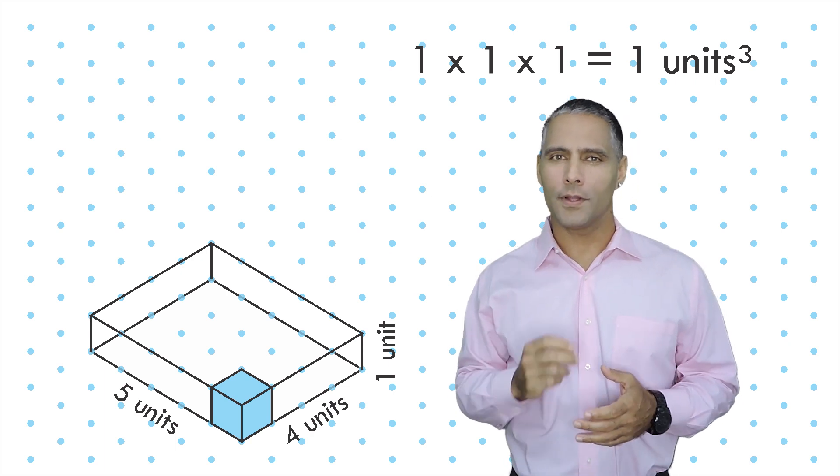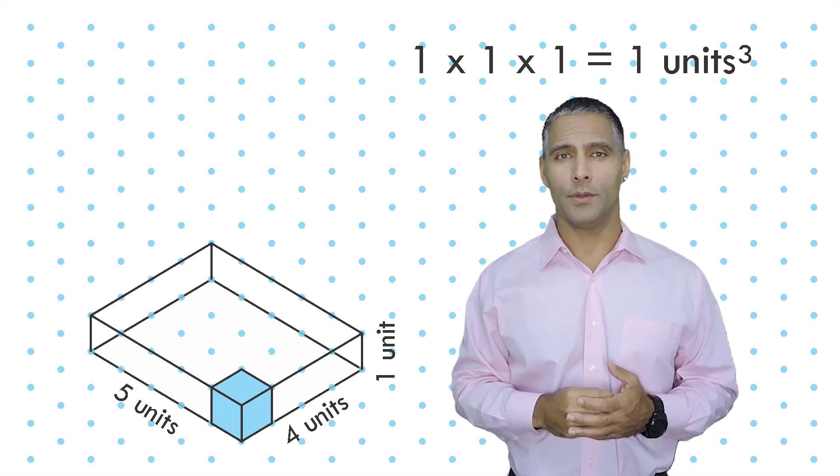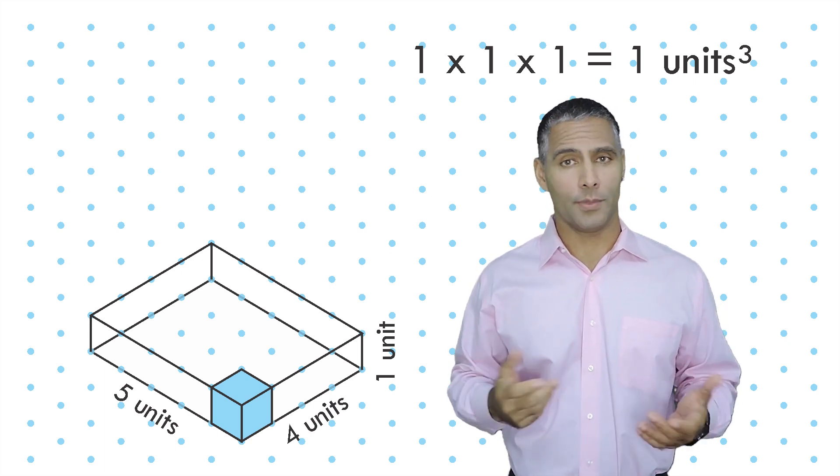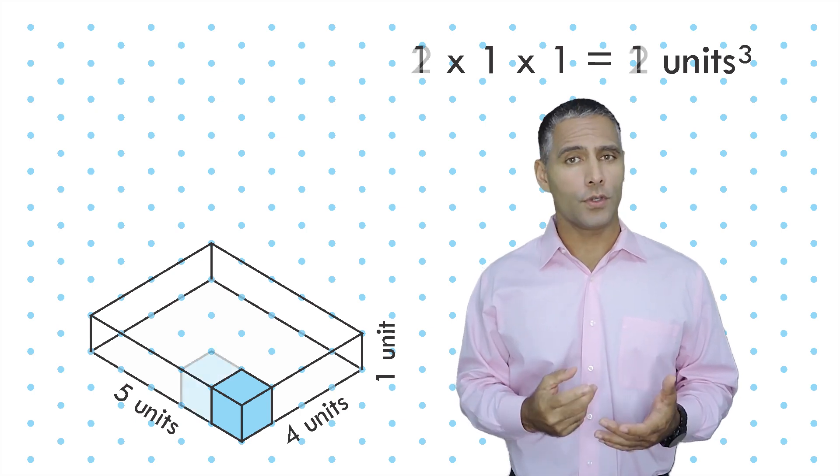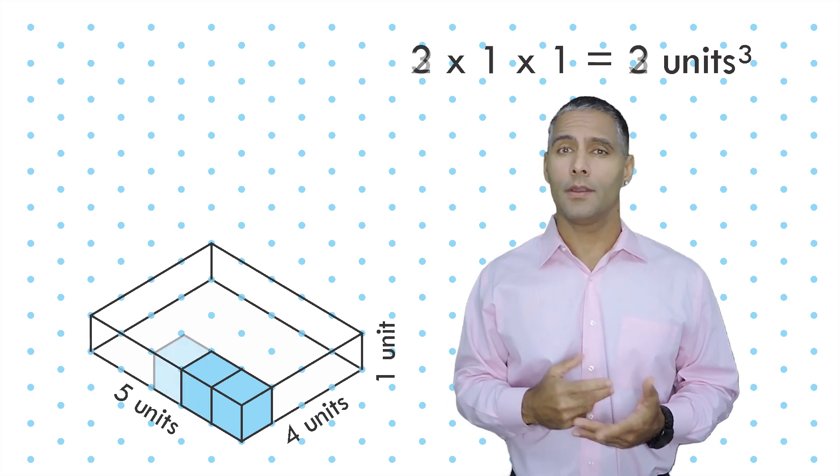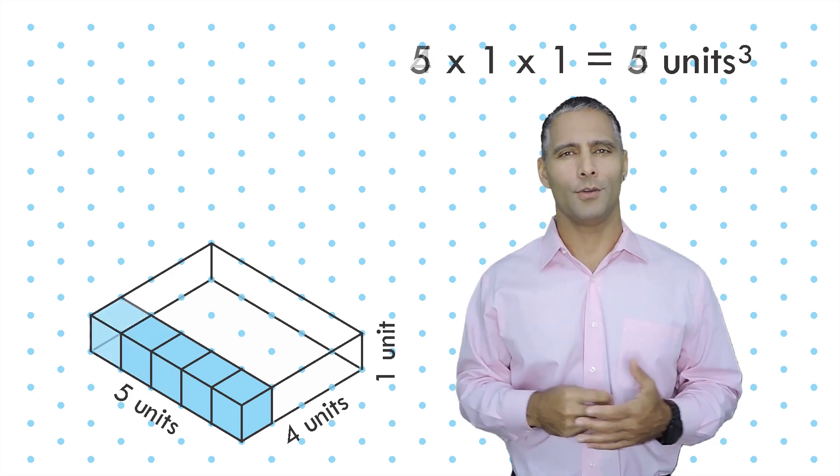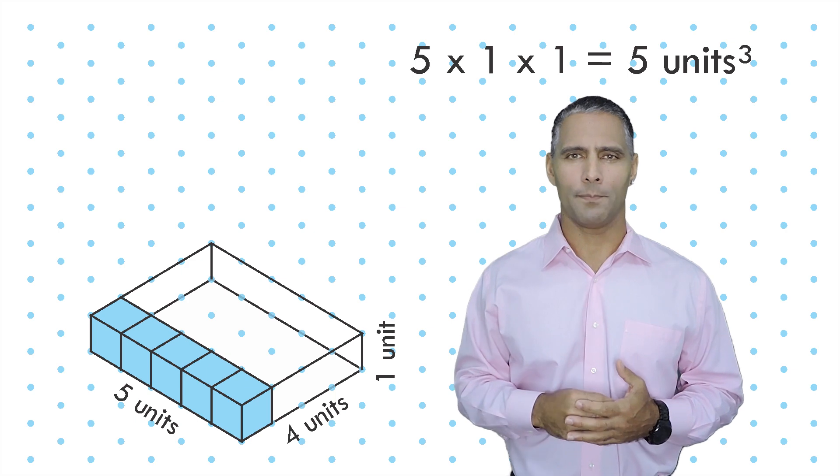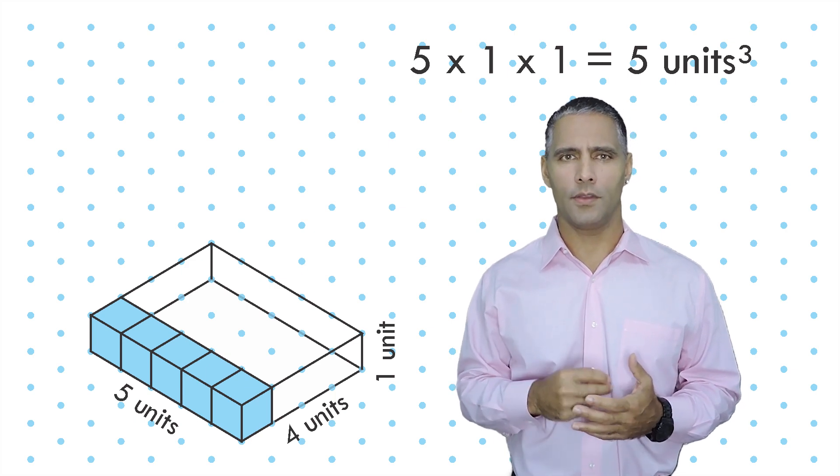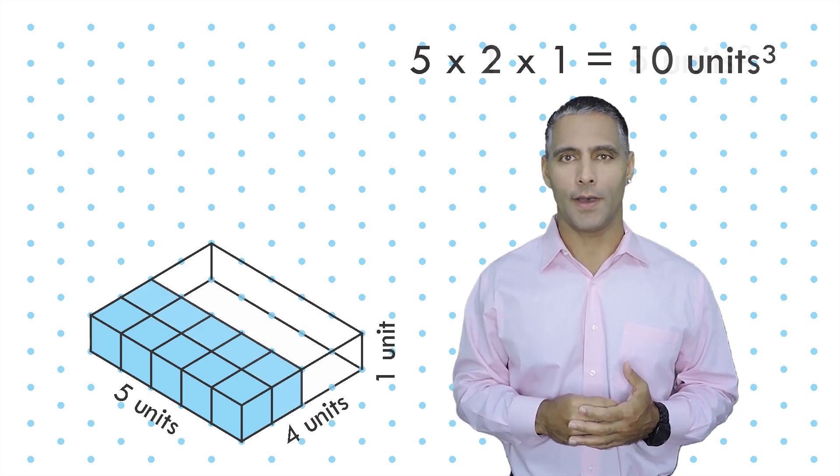So right now we have filled up this container with a single cubic unit, so the volume is one cubic unit. Now we have two cubes, so the volume is two cubic units. Now we have a volume of three cubic units, four cubic units, and five cubic units. Now let's take this row of five and add a second row of five.